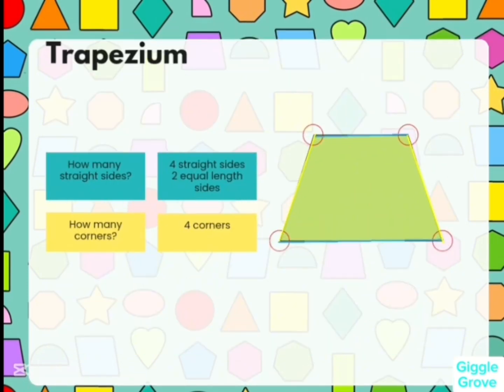Now we will see the properties of trapezium. How many straight sides? There are four straight sides and two equivalent sides. And how many corners? There are four corners.